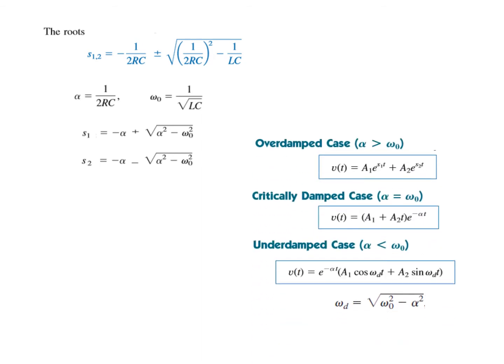Depending on the values of alpha and omega-zero, there are three cases. If alpha is greater than omega-zero, it is the overdamped case. If alpha equals omega-zero, it is the critically damped case. If alpha is less than omega-zero, it is the underdamped case, where omega-D is given by the formula shown.